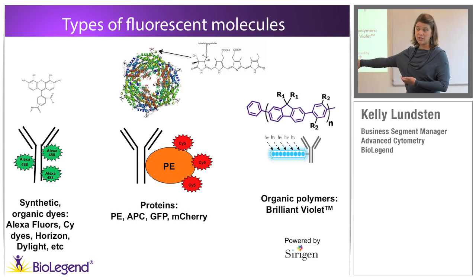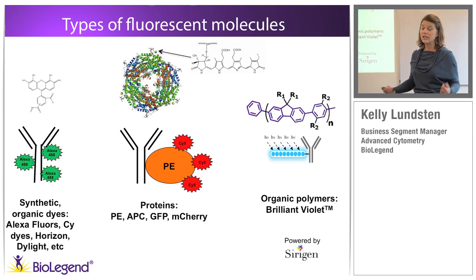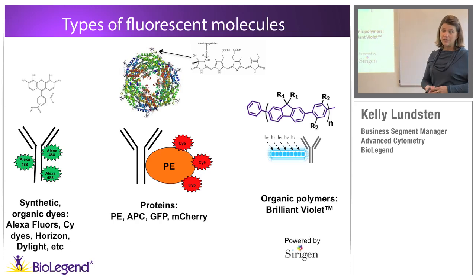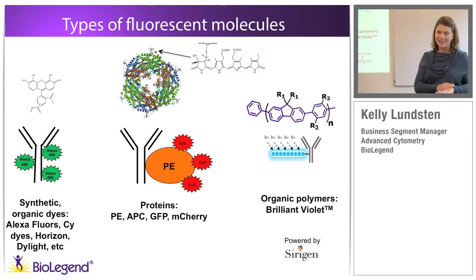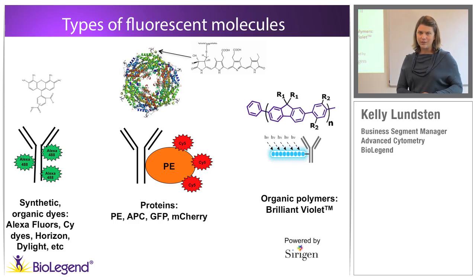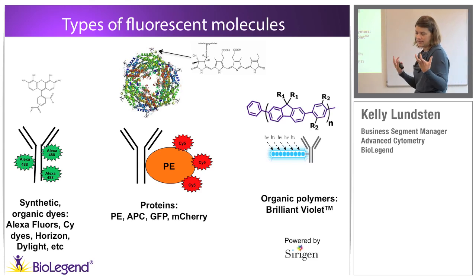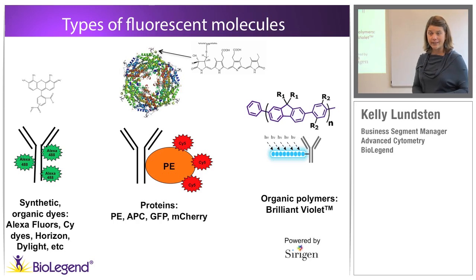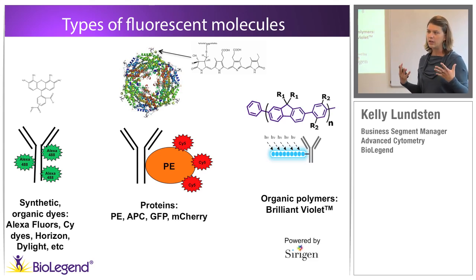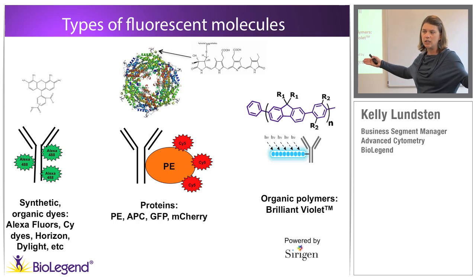However, because PE is a protein, if it's denatured — by freezing and thawing, or by organic solvents like methanol — the rigidity collapses. But because PE has 15 chromophores donating energy to an acceptor, it makes a fantastic donor in a tandem. That's why we use it so heavily for the FRET relationship of PE-Cy5, PerCP-Cy5.5, and all those tandems that allow us to fill out a good nine colors on your flow cytometer.